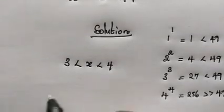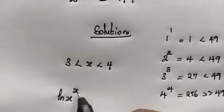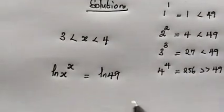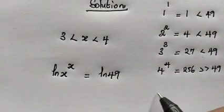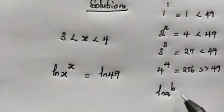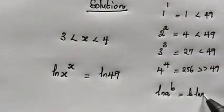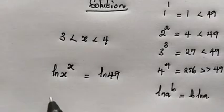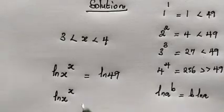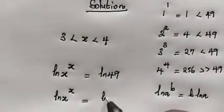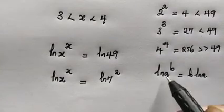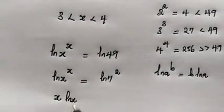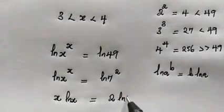We have ln of x raised to the power of x equals ln of 49. Applying the logarithmic power property — ln(a^b) = b·ln(a) — and writing 49 as 7 squared, we get ln(x^x) = ln(7²). This simplifies to x·ln(x) = 2·ln(7).